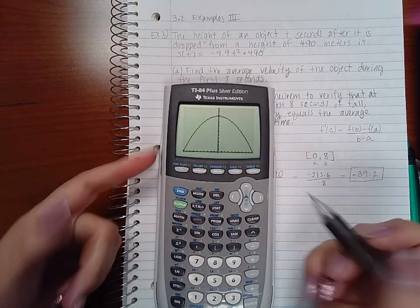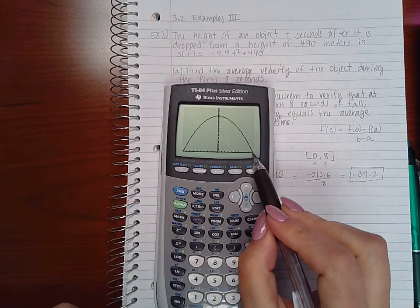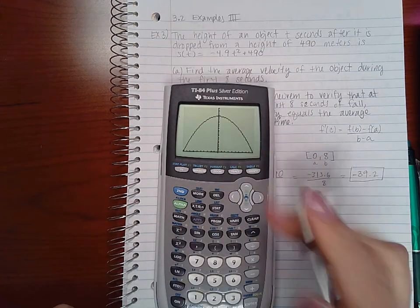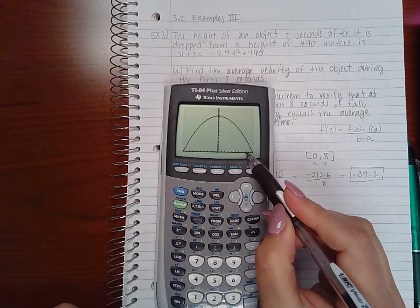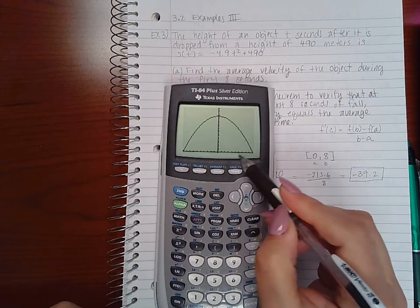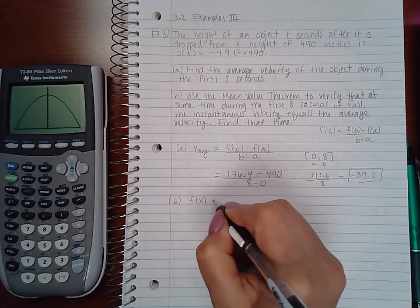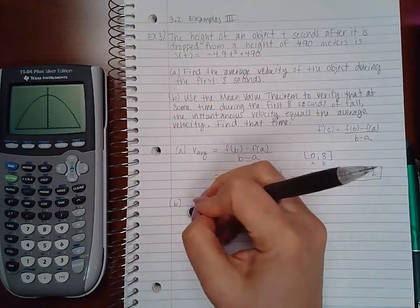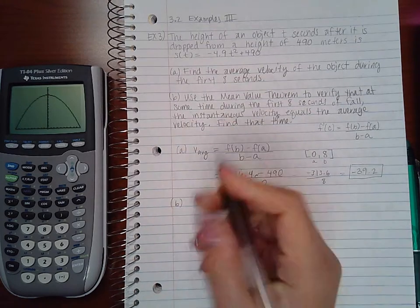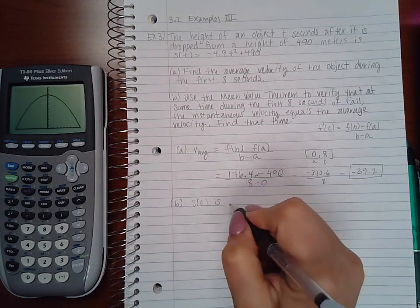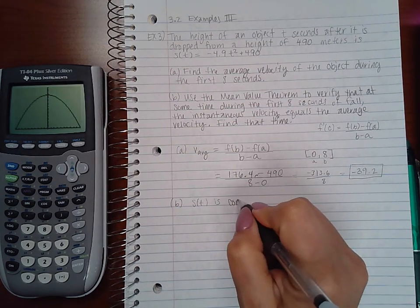So this is what my graph looks like, and this is from 0 to 10. So if you notice, here is 8. In this interval from 0 to 8, the function is continuous. So s(t) is continuous on [0, 8].